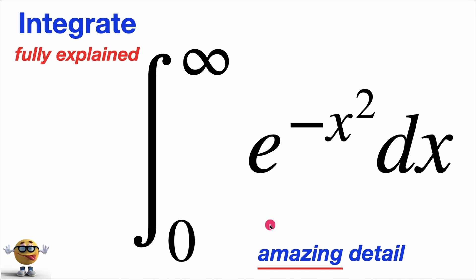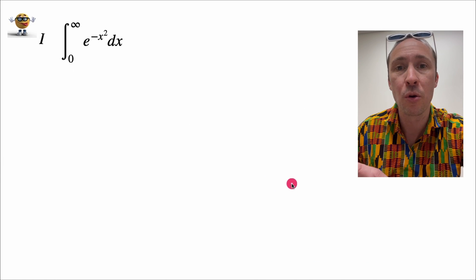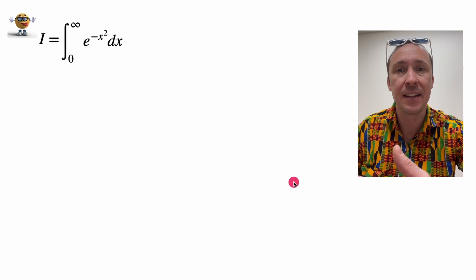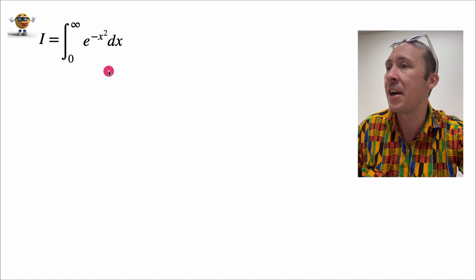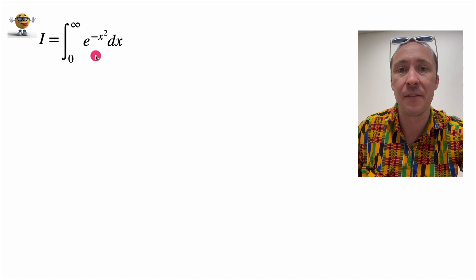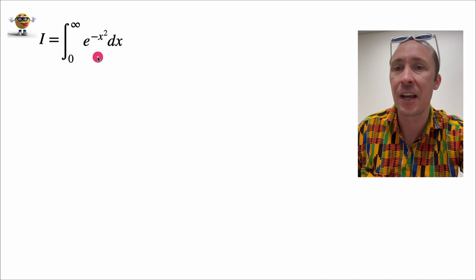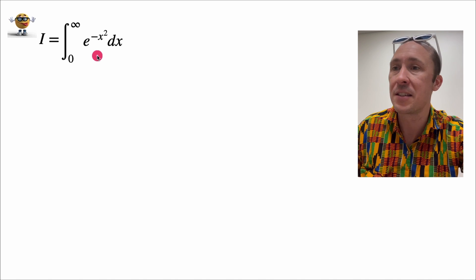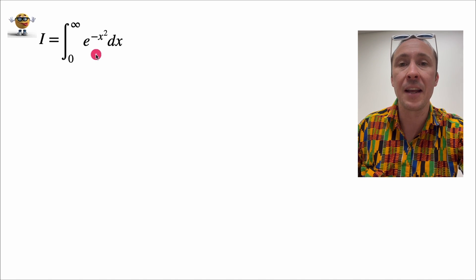What's up y'all? We're going to evaluate the integral of e to the negative x squared. This is a Gaussian function from zero to infinity and it's going to be awesome. We're going to use polar coordinates and I'm going to explain everything in significant detail. I have a shortcut version of this method you can check out, and I've also evaluated this integral in other ways you can check out as well.